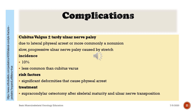Cubitus valgus plus or minus tardy ulnar nerve palsy: due to lateral physeal arrest or, more commonly, a non-union. Slow, progressive ulnar nerve palsy caused by stretch. Incidence: 10%; less common than cubitus varus. Risk factors: significant deformities that cause physeal arrest. Treatment: supracondylar osteotomy after skeletal maturity and ulnar nerve transposition.